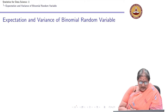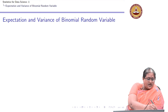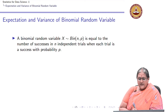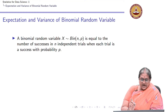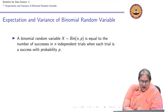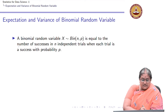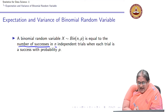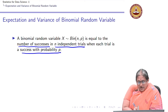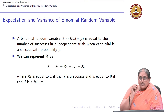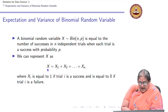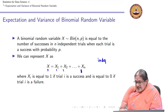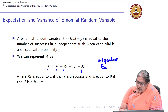What is the expectation of a binomial random variable? The expectation of a binomial random variable is equal to the number of successes. A binomial random variable X is defined as the number of successes in independent trials where the probability of a success is p. The binomial random variable arises as the sum of independent and identically distributed Bernoulli trials.